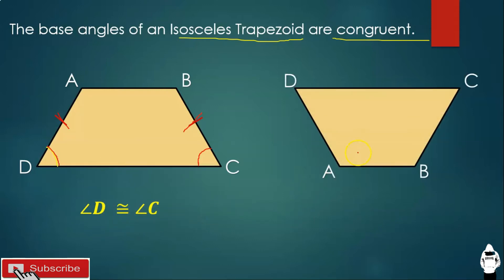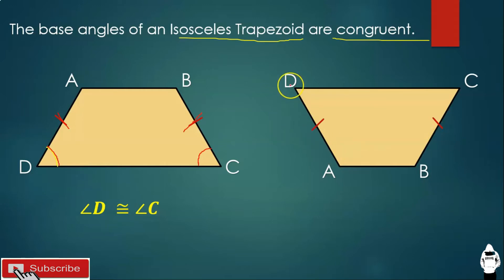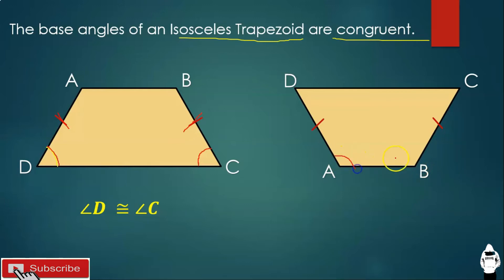Let's have another figure. The base angles here are angle A and angle B. So angle A is congruent to angle B.